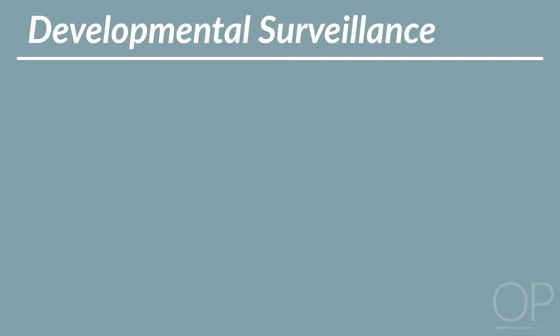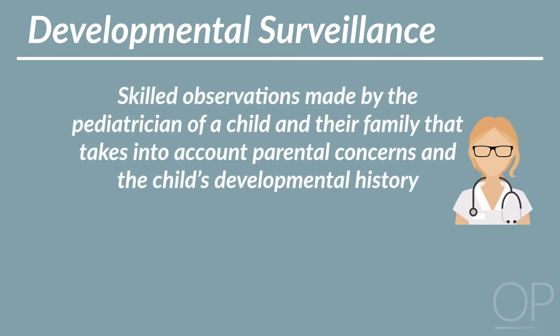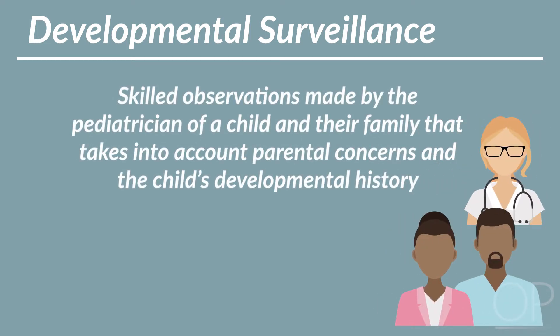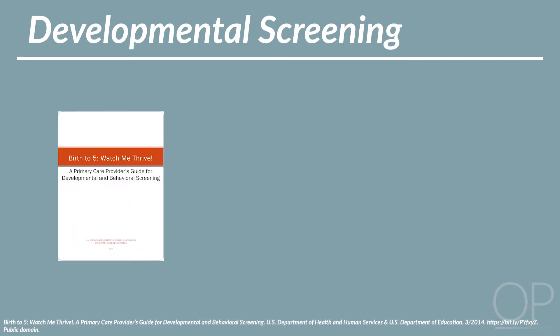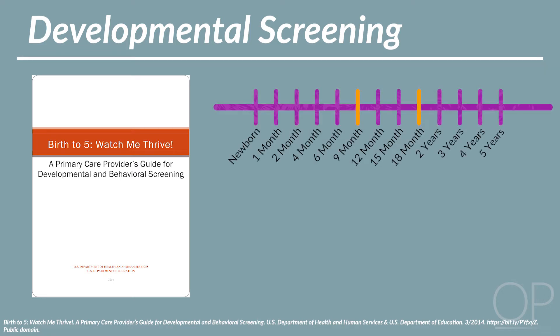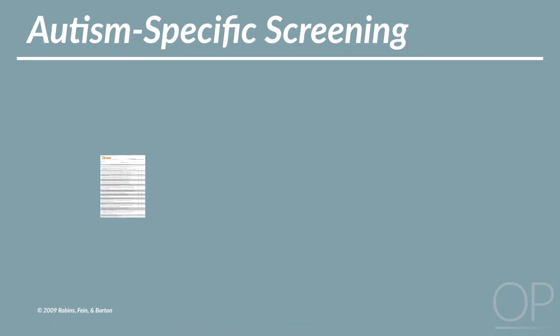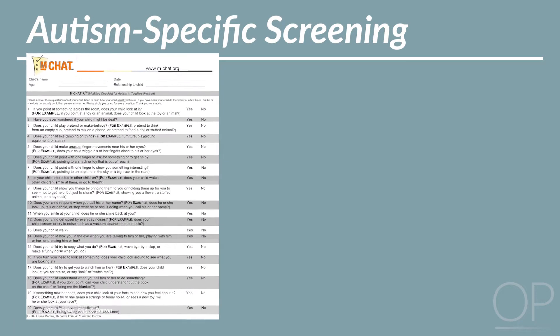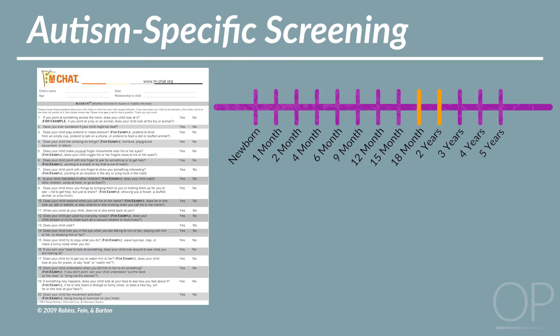Developmental surveillance is a term used for the skilled observations made by the pediatrician of a child and their family, taking into account parental concerns and the child's developmental history. Developmental surveillance is ideally performed by every pediatrician at every visit. Developmental screening is a term for the use of a standardized, objective measure given to the parent to assess development. Developmental screening is recommended at least three times, at 9, 18, and 24 months.